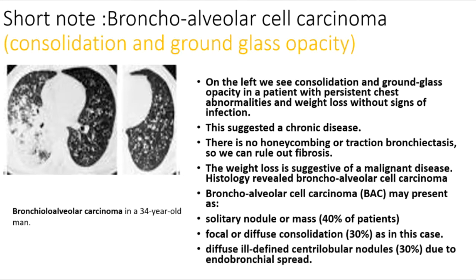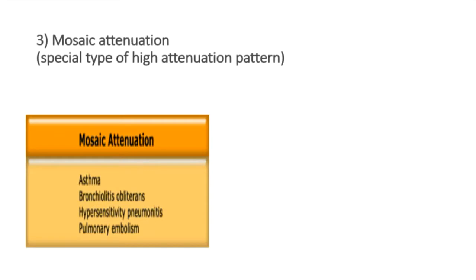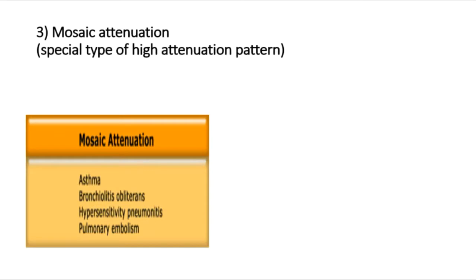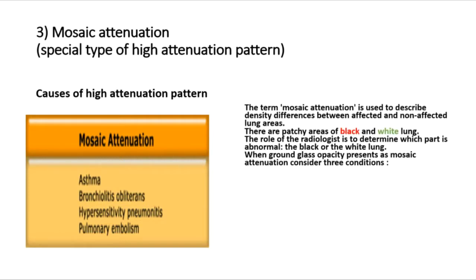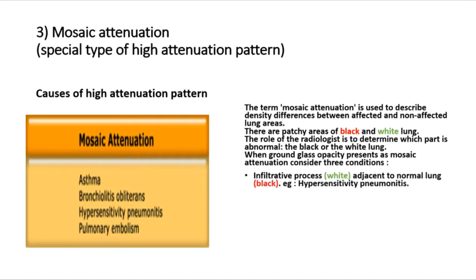Mosaic attenuation is a special type of high attenuation pattern, used to describe density differences between affected and non-affected lung areas — patchy areas of black and white lung. The radiologist's role is to determine which part is abnormal: the black or the white lung. When ground glass opacity presents as mosaic attenuation, three conditions should be considered: an infiltrative process (white lung adjacent to normal black lung), e.g., hypersensitivity pneumonitis.